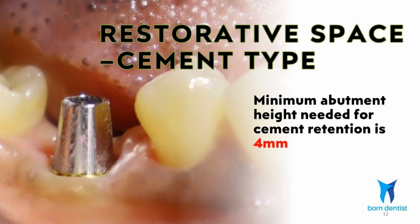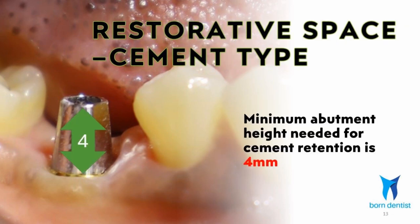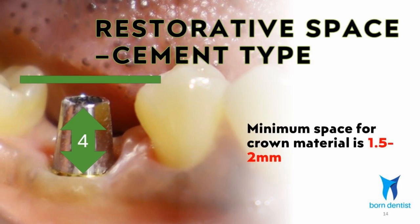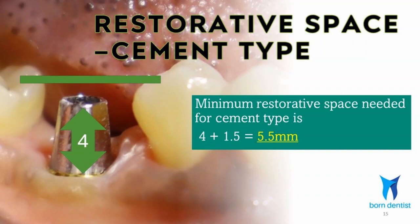Let us look at how restorative space influences the cement type implant crown. The minimum abutment height required for a cemented crown to be retentive is 4 mm. The minimum space required for crown thickness is 1.5–2 mm depending on the material used. So the minimum vertical restorative space required to fabricate a cement retained crown is 4 plus 1.5, that means 5.5 mm. If the given case has less than 5.5 mm vertical space, it is inappropriate for a cement type restoration.